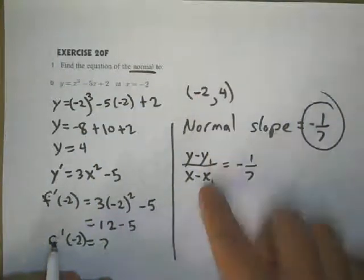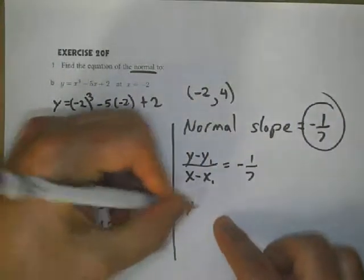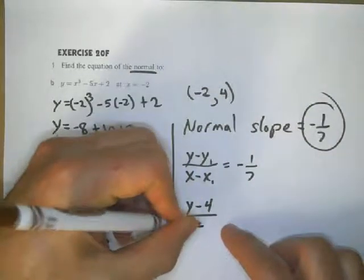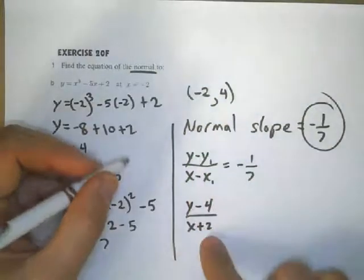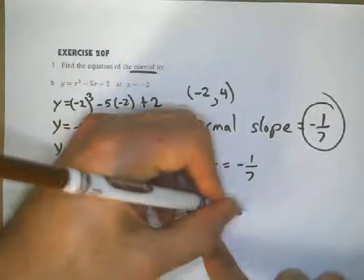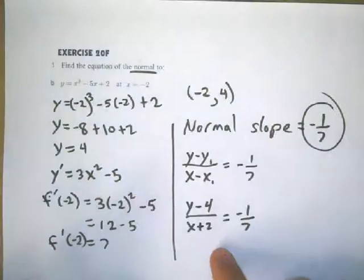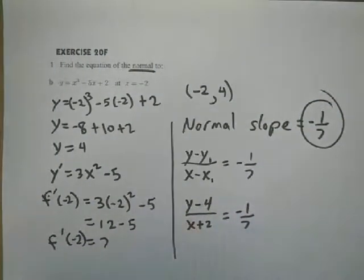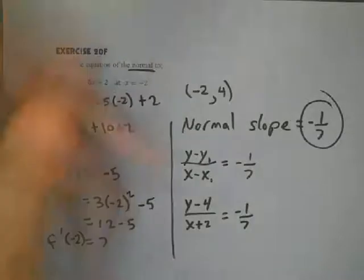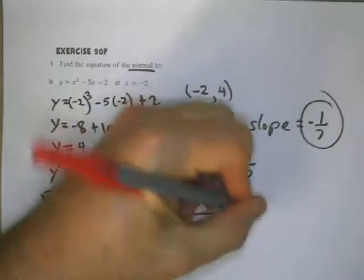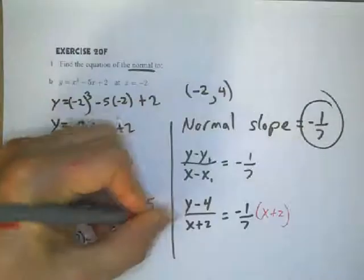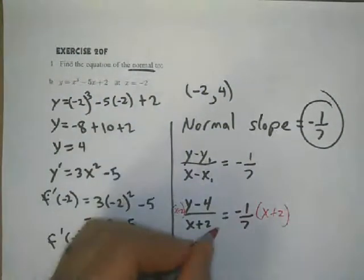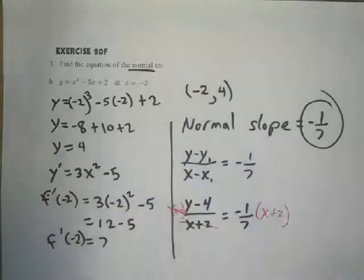Since we're trying to solve for y, I'm going to multiply both sides of the equation by x plus 2. The reason I do that is to make the x plus 2 on the top and bottom cancel out.